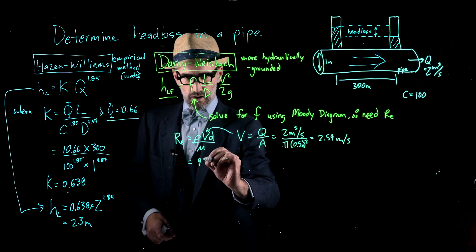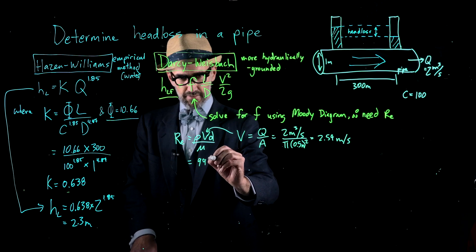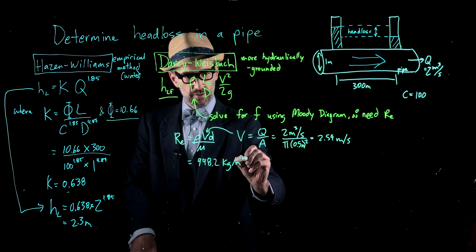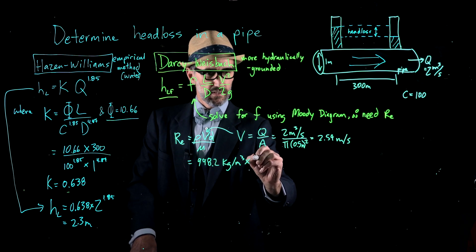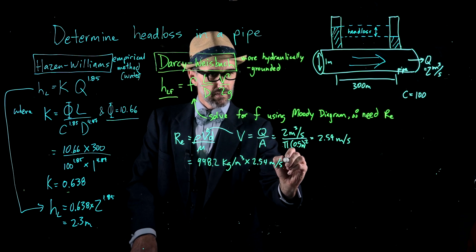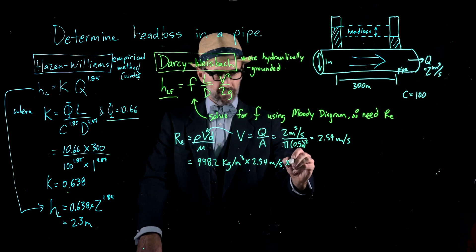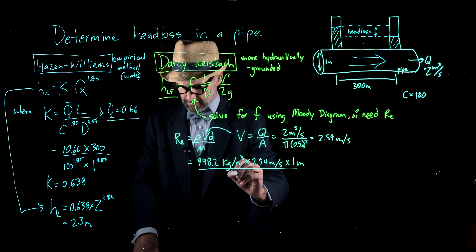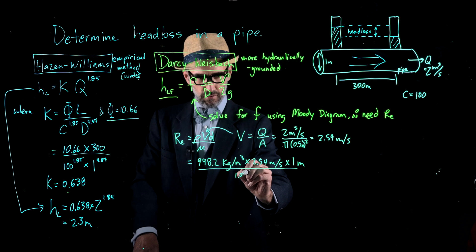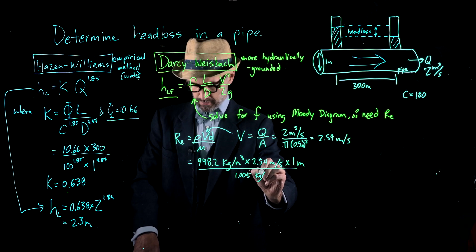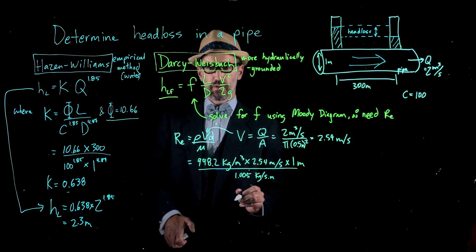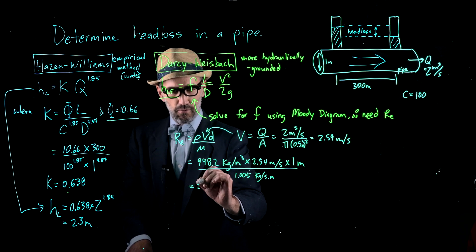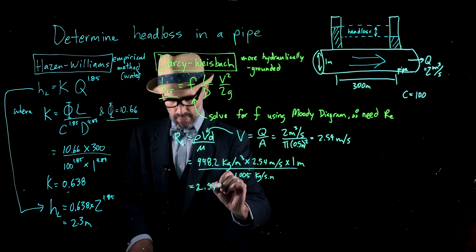Now we substitute in the other known quantities. The density of water is 998.2 kilograms per meter cubed, multiplied by the velocity of 2.54 meters per second, multiplied by the diameter of 1 meter, all over the viscosity of water, 0.05 kg per second per meter. From that, we get a Reynolds number equal to 2.54 times 10 to the 6.